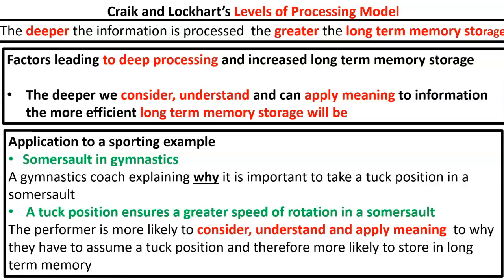So as a recap: there are three levels of processing — two are shallow, one is deep. The deeper we process, the more we process, and therefore the more information is stored in our long-term memory. We also need to understand the three factors that align to deep processing: consideration, understanding, and meaning. Then we need to consider a sporting example alongside that. Please make good notes on this.